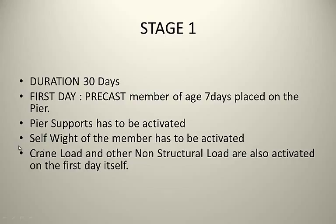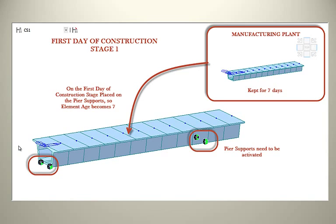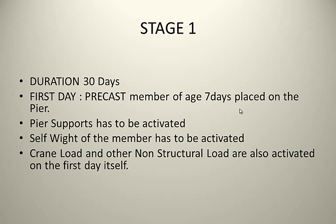Additionally, as you asked about adding a crane load or non-structural load — for the next segment there will be some crane loads and gantry girders. For those, we can activate a non-structural load additionally to the self-weight on the elements. Our stage one defines these things: elements, boundaries, self-weight, and crane load.